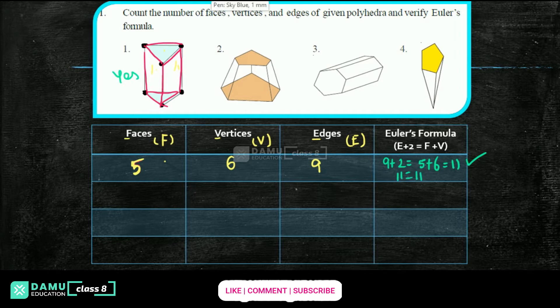The next shape: how many faces are there? Top and bottom make 2, then surroundings — 5 line segments, so 5 faces for the sides, plus top and bottom: 5 plus 2 = 7 faces. Then how many vertices?